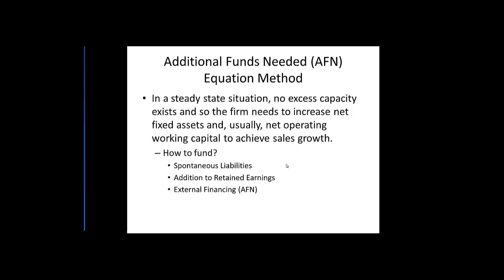In a steady state situation with no excess capacity — a classroom with 40 seats and 40 students — in order to grow sales, you'd have to increase the size of the room and number of desks. The firm needs to increase net fixed assets and net operating working capital to achieve sales growth. Net operating working capital consists of accounts receivable, inventories, and typically cash necessary for day-to-day operations. To increase sales, inventories and accounts receivable increase, and additional cash is needed for utilities, employees, and daily needs.